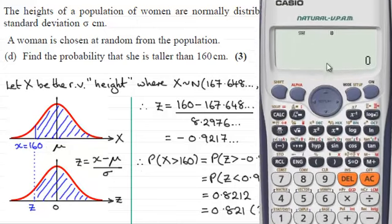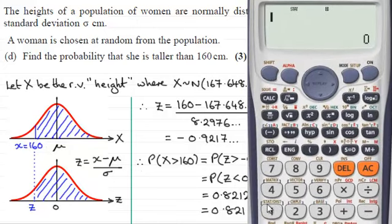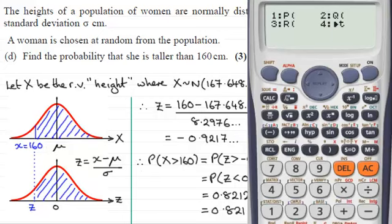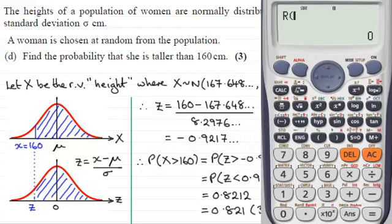To get the normal distribution up, press shift then one to access stats distributions, and select number five for distributions. We're presented with a menu. Since we have a Z value of minus 0.9217 and want the area to the right of it, we use function number three. Press three — up comes function R — enter negative 0.9217, close the bracket, and press equals. There's our probability of being more than that value: 0.82166.